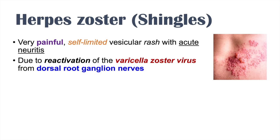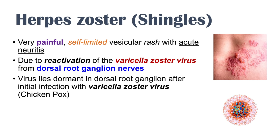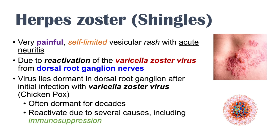Shingles or herpes zoster is due to reactivation of the varicella zoster virus from dorsal root ganglion nerves. The virus lies dormant in dorsal ganglia after an initial infection with varicella zoster virus, which causes chickenpox. So in order for an individual to actually get shingles, they would have had to have had an infection with chickenpox sometime in their life prior. The virus most often occurs in childhood, lies dormant in dorsal root ganglion nerves suppressed by the immune system for several decades, and then reactivates due to immunosuppression or other causes.